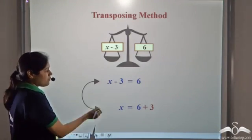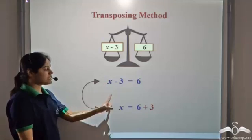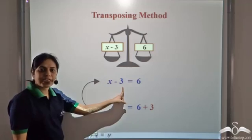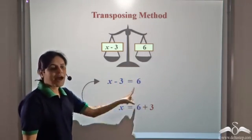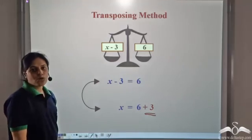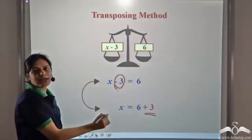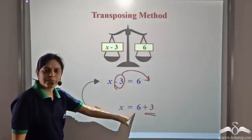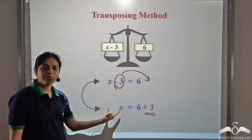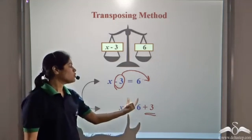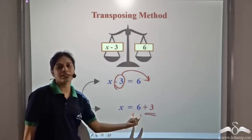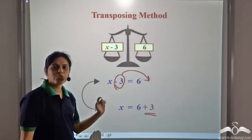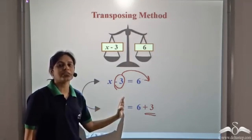Once again, we can come directly from this step to this step. If we have a minus 3 on the left hand side, we can take it to the right hand side and write it as plus 3. So we have transposed minus 3 from the left hand side to the right hand side and written it as plus 3. So we can transpose a term from one side of the equation to the other by reversing the sign, and the equation still remains the same.